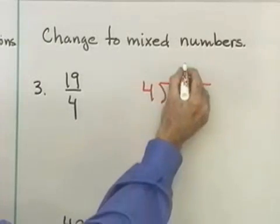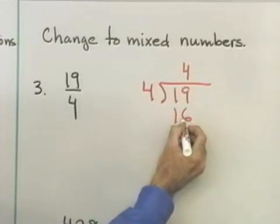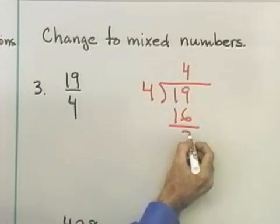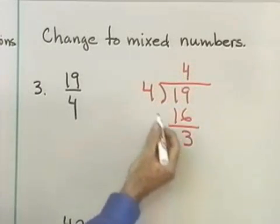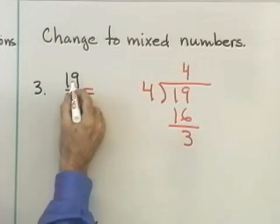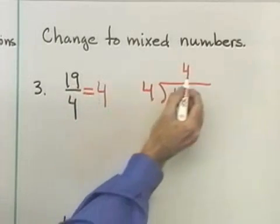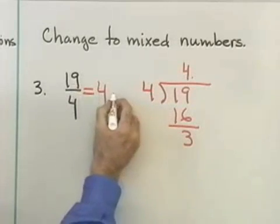Divide 4 into 19. 4 divides into 19, let's see, 4 times. 4 times 4 is 16. I subtract and get 3. So, what I'm going to do is say this: 19/4 is the same as 4, that's this, plus another 3/4.